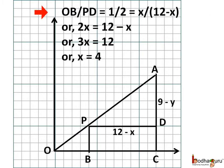So we can easily find the values of x and y from this relation. OB by PD equal to 1 by 2. OB is x. PD is 12 minus x. So x by (12 minus x) equal to 1 by 2. Simplifying, 2x equal to 12 minus x. Which means 3x equal to 12. So x equal to 4.